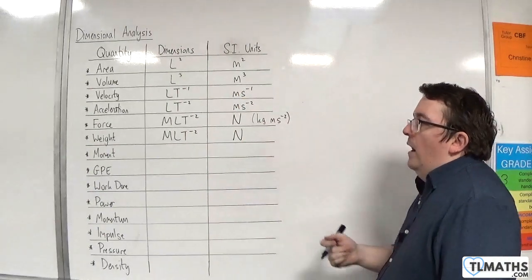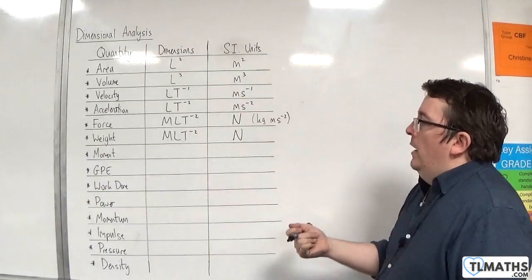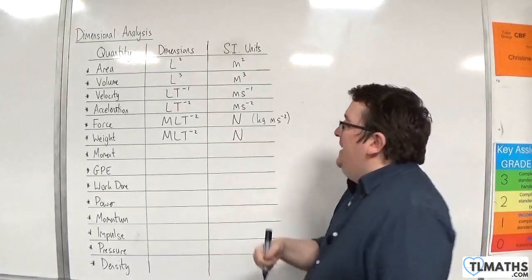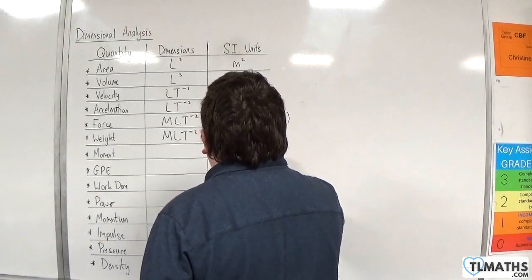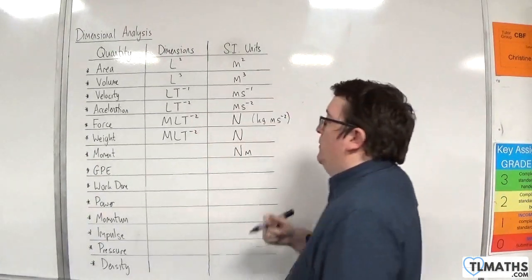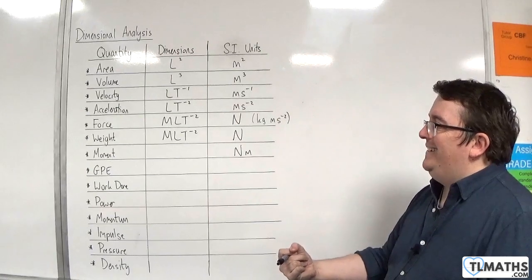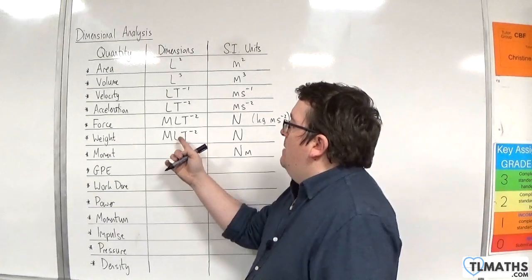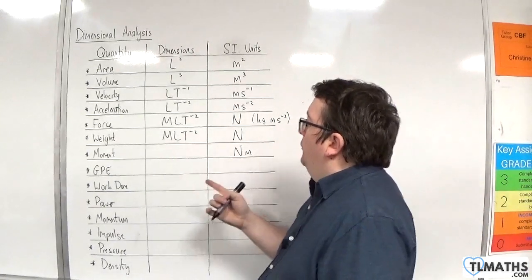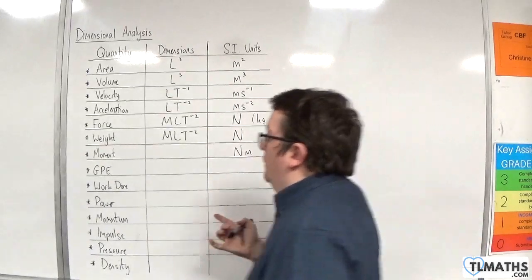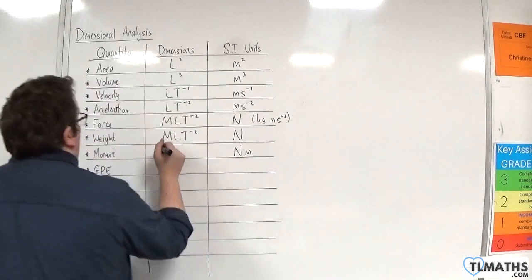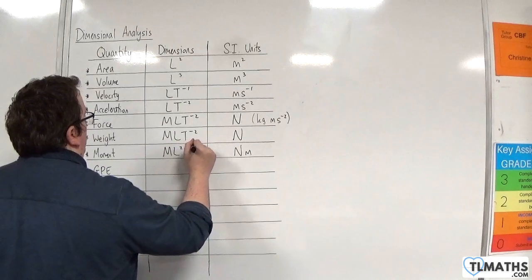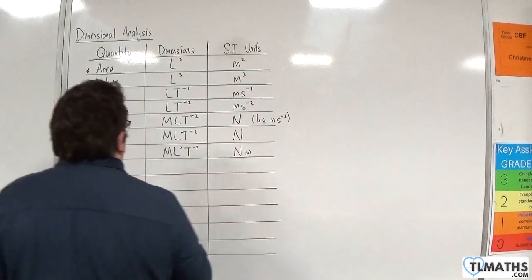A moment is measured in newton metres, because you multiply the force by the perpendicular distance. So, we have M, L, T to the minus two, times by another length. That gives us M, L squared, T to the minus two.